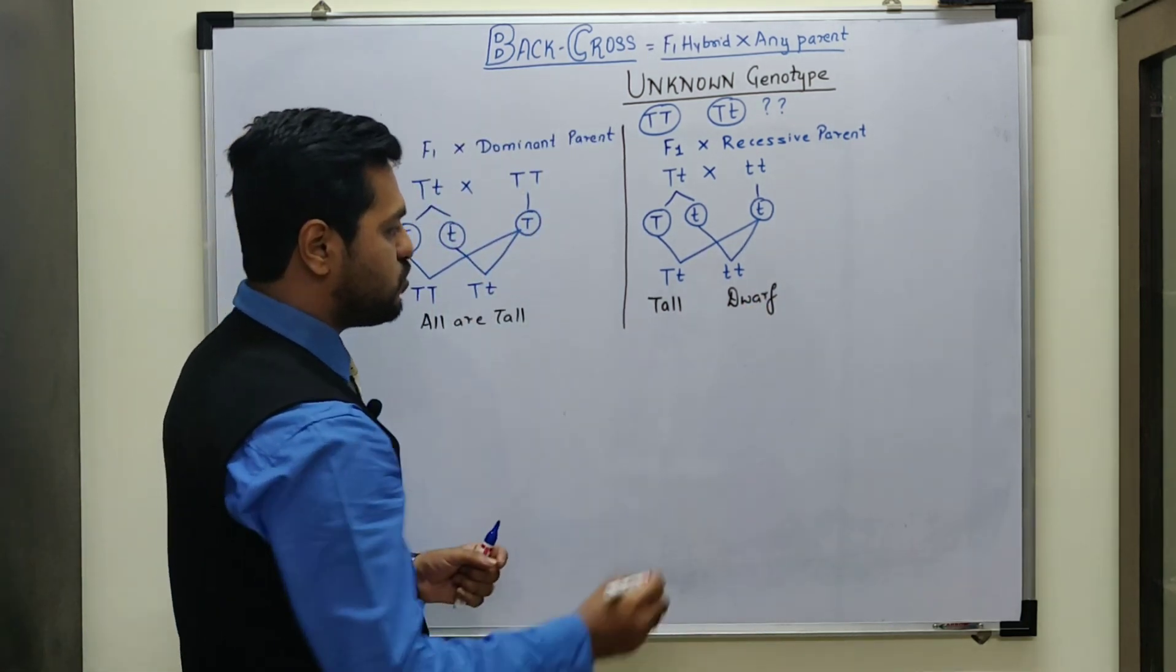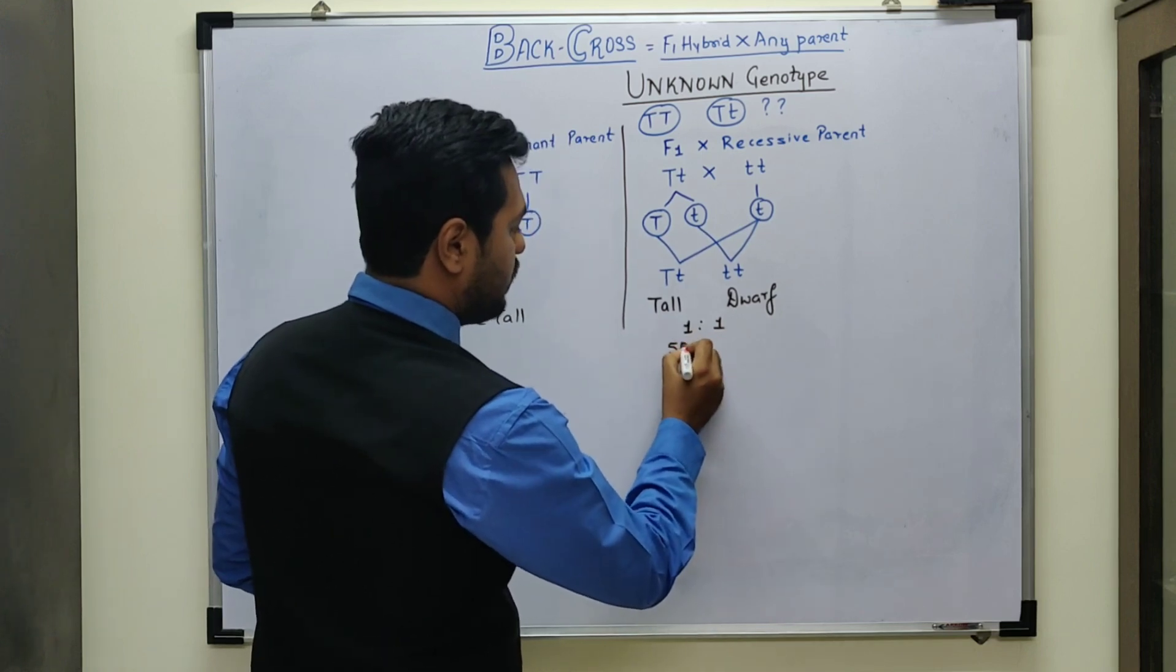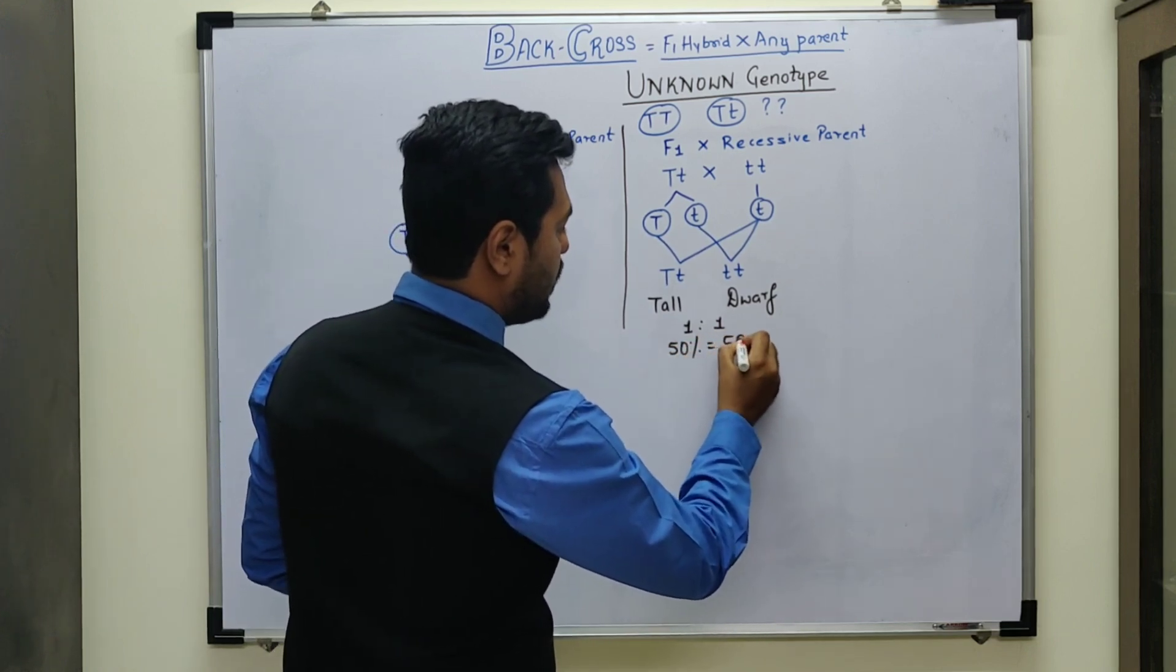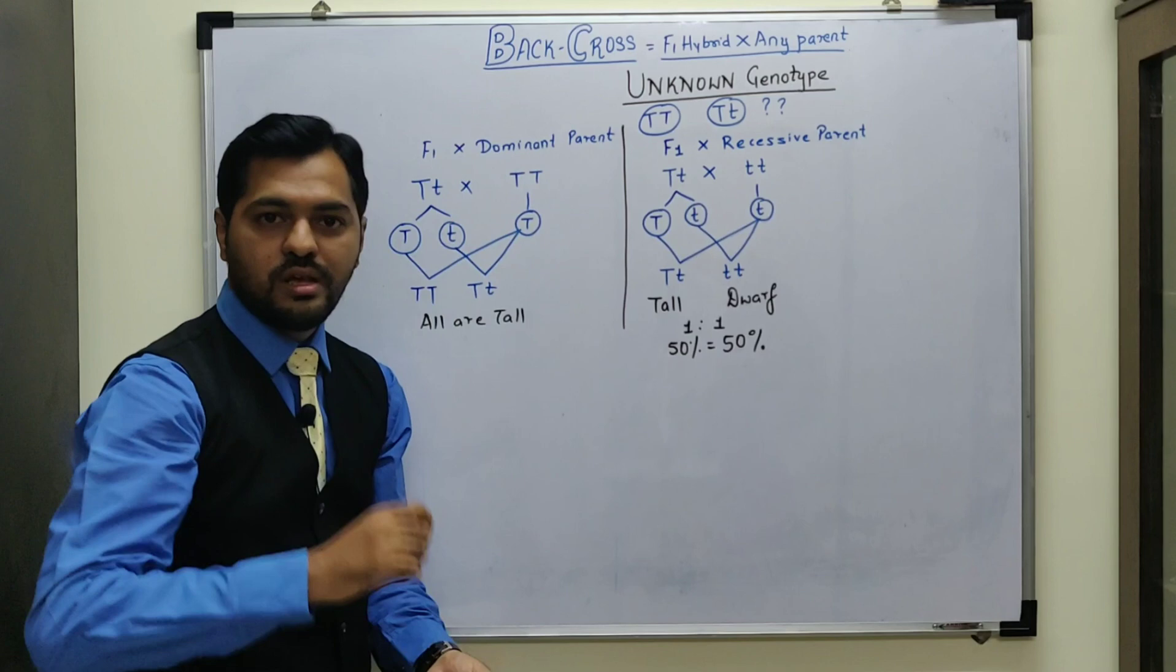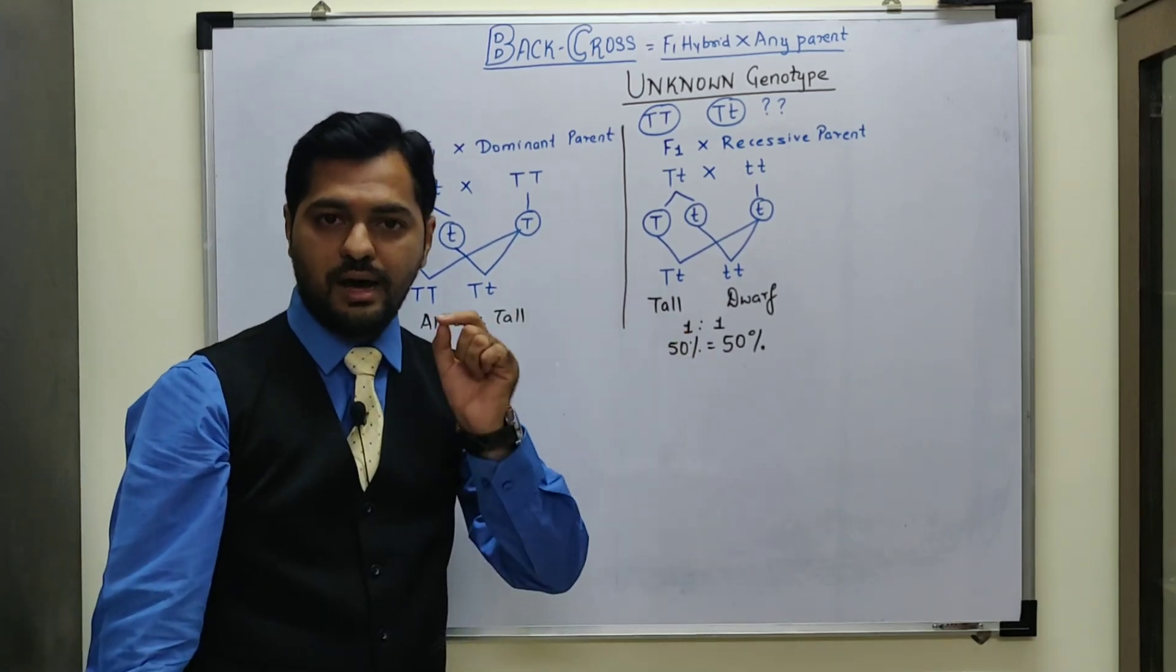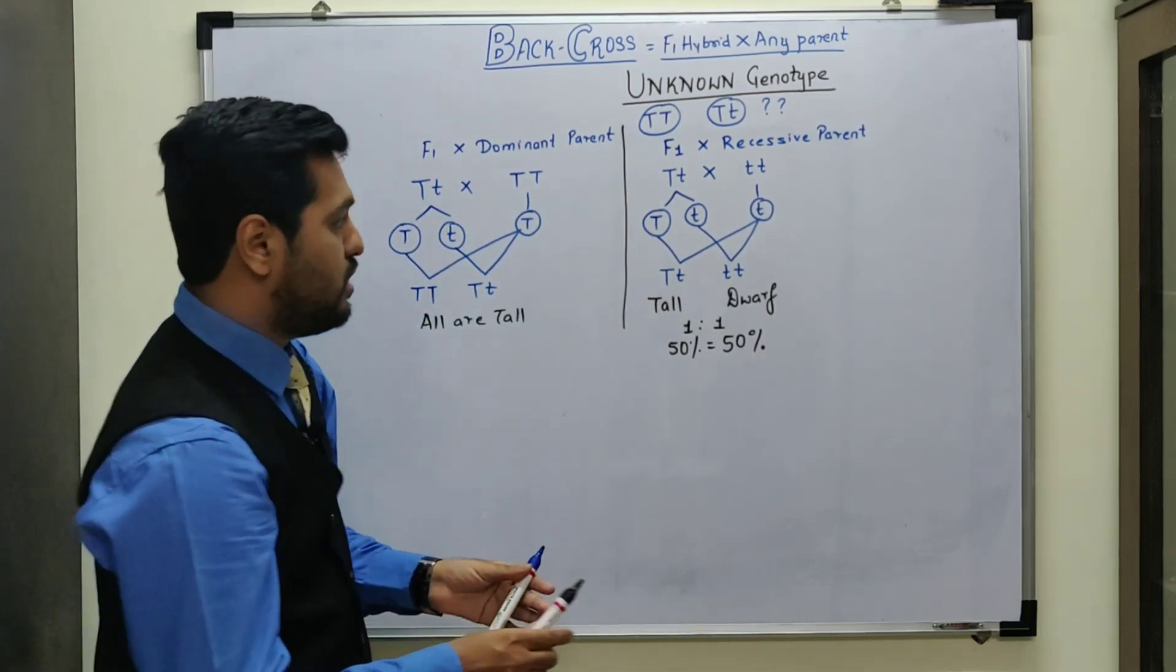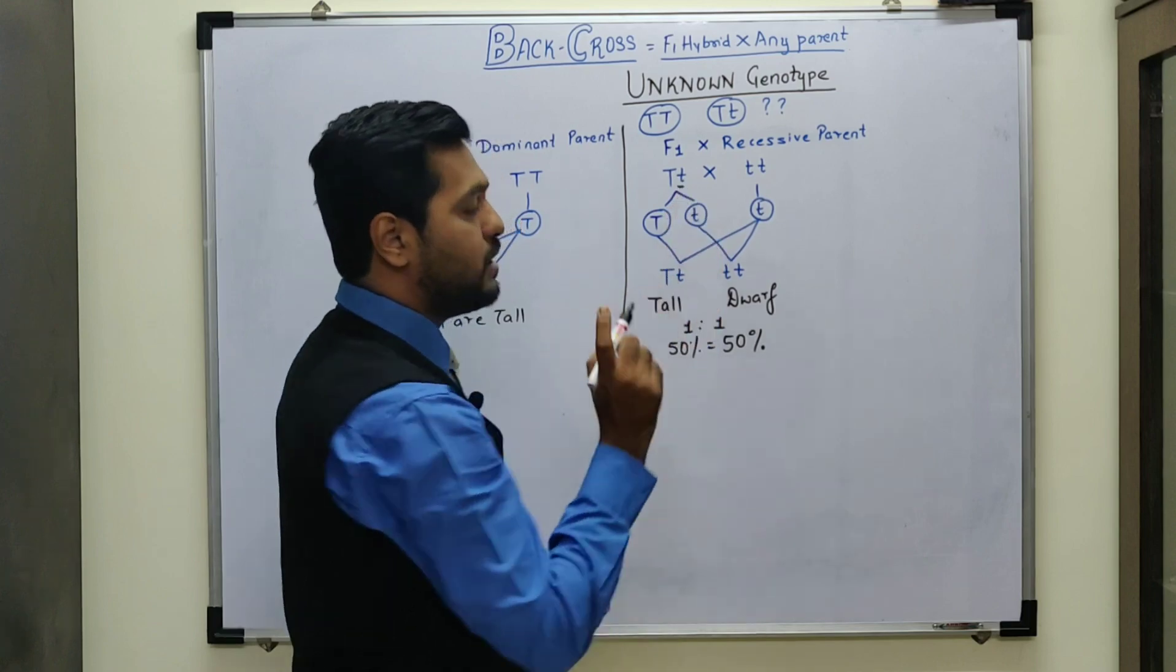So the ratio that is coming in this back cross is one is to one. That means 50% are tall and 50% are dwarf organisms. Since in this cross, the ratio of one is to one, that shows this F1 organism is not pure, it is definitely hybrid.